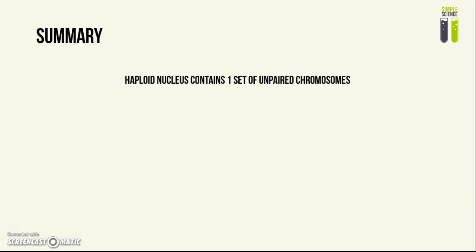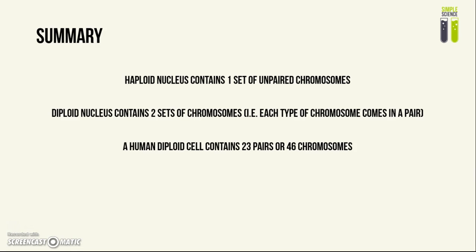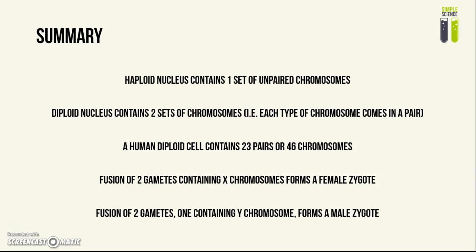To summarize: a haploid nucleus has one set of unpaired chromosomes — an example of a haploid cell is a sperm cell. A diploid nucleus contains two sets of chromosomes and each type of chromosome comes in a pair — an example of a diploid cell is a normal body cell like a liver cell. In humans, diploid cells have 23 pairs of chromosomes, or 46 chromosomes in total. Regarding sex inheritance, fusion of two gametes both containing X chromosomes forms a female zygote. If one gamete — always the sperm — contains a Y chromosome, this will form a male zygote, as the sperm can contain either Y or X.